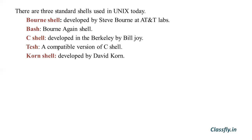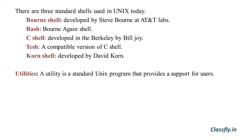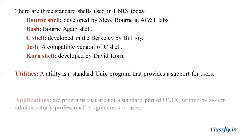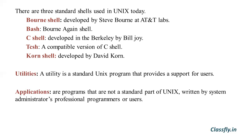The next important part of the structure of UNIX is utilities. A utility is a standard UNIX program that provides support for users. Three common utilities are text editors, search programs, and sort programs. Applications are programs that are not a standard part of UNIX — they are written by system administrators, professional programmers, or users, and they provide extended capability to the system. This was a brief description of UNIX structure.